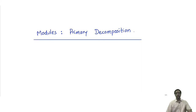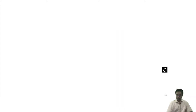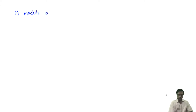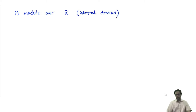Let us talk about the notion of primary decomposition of modules. Suppose M is a module over an integral domain R. Recall that integral domain means R is a commutative ring without any zero divisors. If we have a module over an integral domain, then it makes sense to define the following notion.